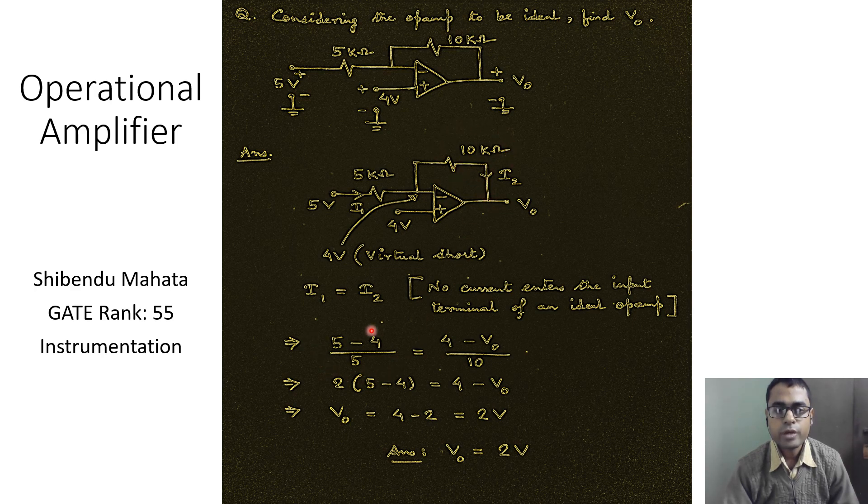From here we do this math and can find out the value of V_naught as 2 volts.